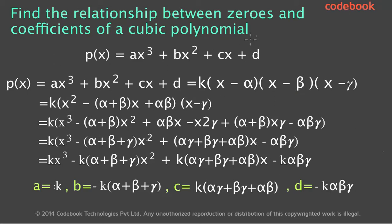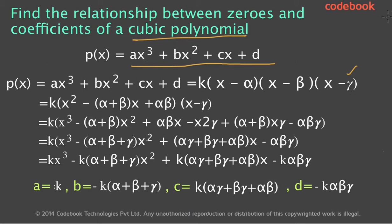In this lesson we will look at the relationship between zeros and coefficients of a cubic polynomial. A general form of a cubic polynomial is ax³ + bx² + cx + d. We can express this as k times (x - α)(x - β)(x - γ), similar to how we expressed a quadratic polynomial as k(x - α)(x - β). A cubic polynomial will have three roots, while a quadratic polynomial will have a maximum of two roots. The additional factor here is (x - γ).